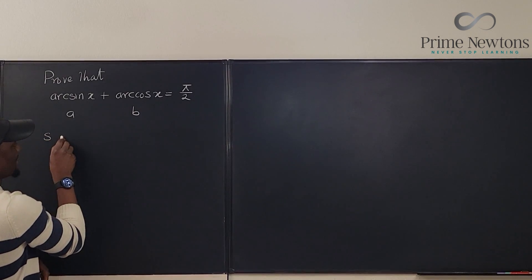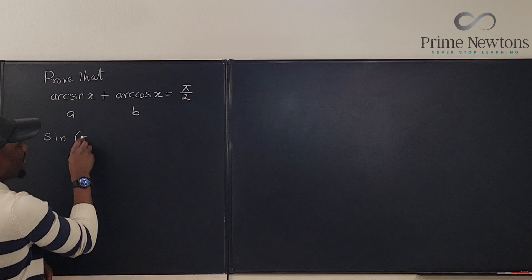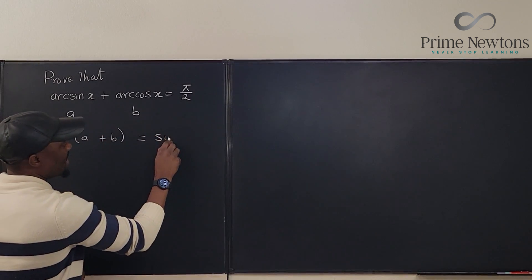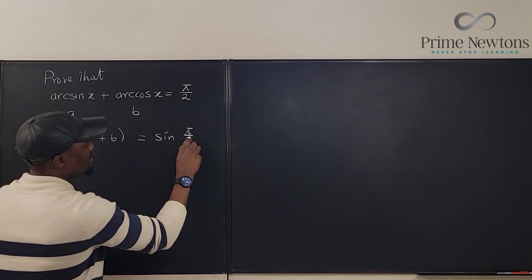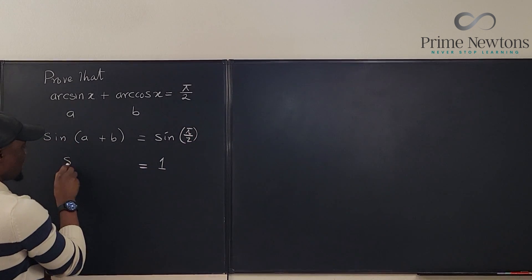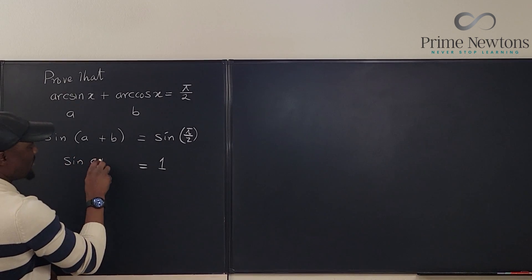If I take the sine of a plus b, it should be the sine of pi over 2. And that means my answer is going to be 1 when I take the sine of a plus b.